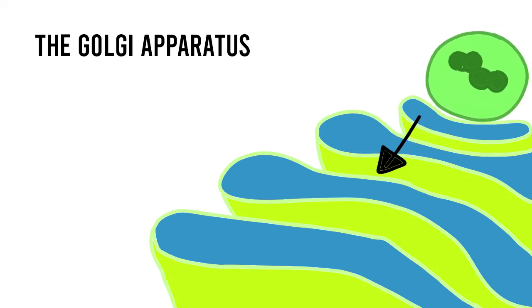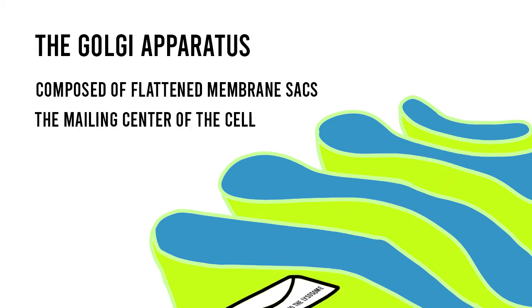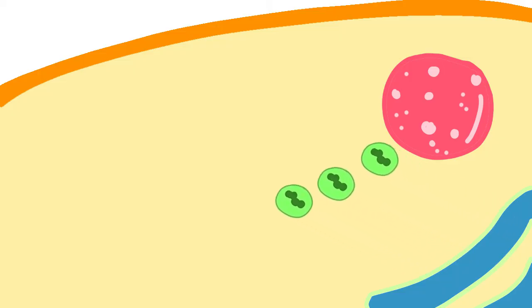The Golgi apparatus or Golgi complex is an organelle composed of flattened membrane sacs. The Golgi apparatus is known as the mailing center of the cell. It functions by receiving small membrane sacs or vesicles from other organelles such as the endoplasmic reticulum containing substances such as proteins which are then modified and transported in new vesicles from the complex. These vesicles will either travel to the cell membrane releasing their contents or travel to other organelles such as the lysosome.